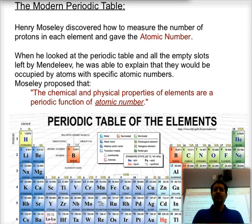Mosley gives us that or says that the chemical and physical properties of elements are actually a periodic function, a gradual function, a repeating function, if you may, of the atomic number, i.e. of the number of protons. So that is going to be what's going to be most important.